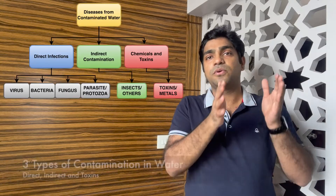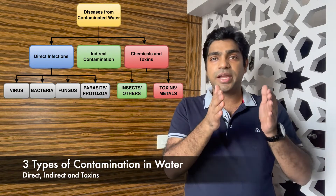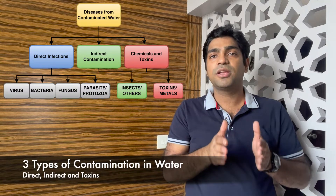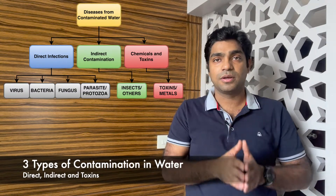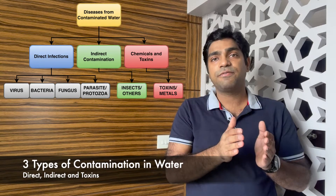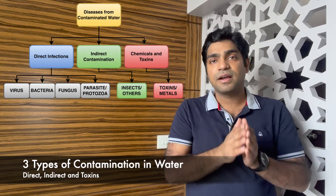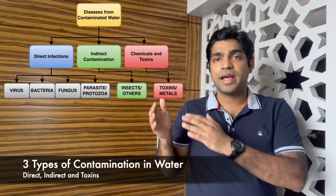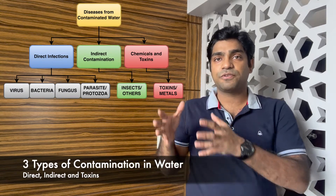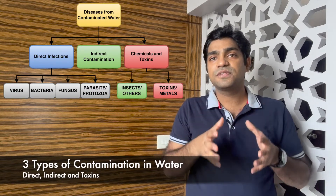When we talk about water contamination, we generally talk about direct infections being present in the water which enter the body through the oral route by drinking this contaminated water. Generally the infections within this category are viral infections, bacterial infections, fungi, protozoans, and parasites. The second is the indirect cause of contamination, wherein the water actually gives rise to some insects and parasites.